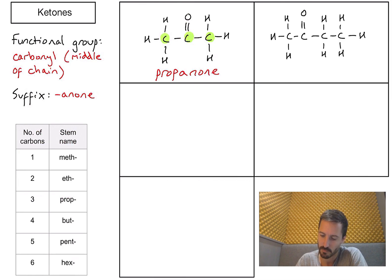Second example. Here we go. Again, I've got my carbonyl functional group in the middle of a carbon chain. So it's definitely a ketone. How many carbons have I got in that chain? I've got one, two, three, four. That relates to the stem part of the name as but-. So I can write but- and then -anone. We call this compound butanone.